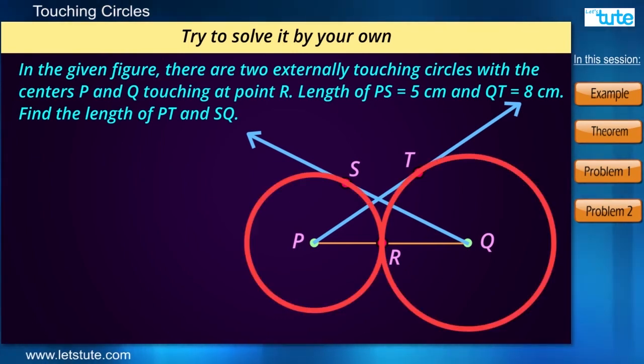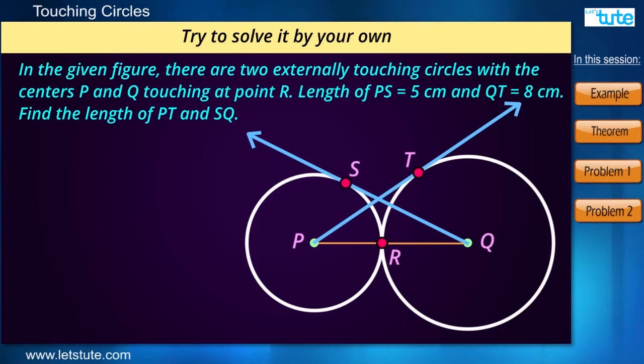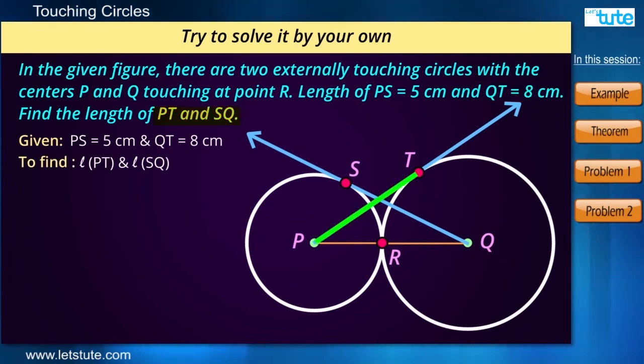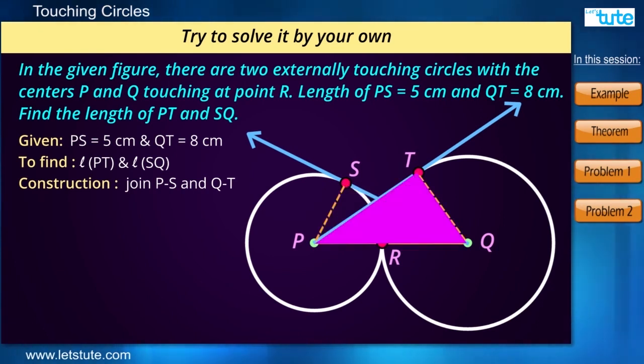Now in this given figure, there are two externally touching circles with the centers as P and Q, which are touching at a point R. We know the length of PS and we know the length of QT. Now we need to find the length of PT and we need to find the length of SQ. Now as we join PS and QT, we can see that certain triangles are formed, correct?